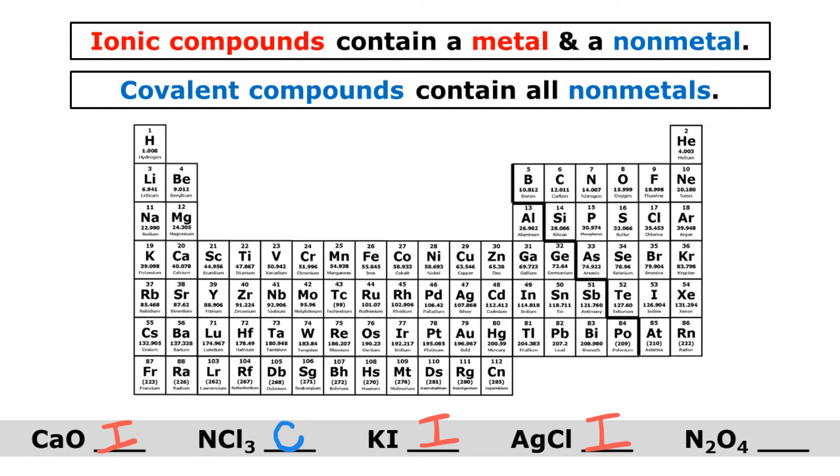We have N2O4, or dinitrogen tetroxide. So nitrogen is a non-metal and oxygen is a non-metal. So because this compound contains all non-metals, it's a covalent compound.